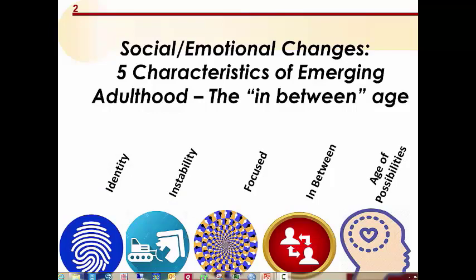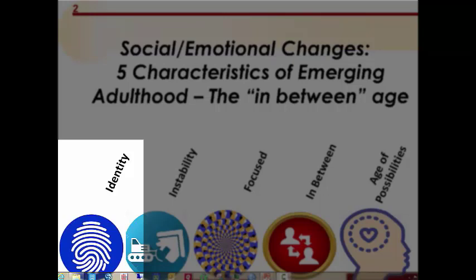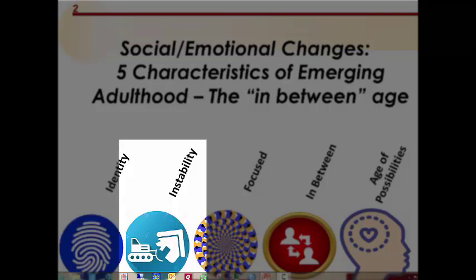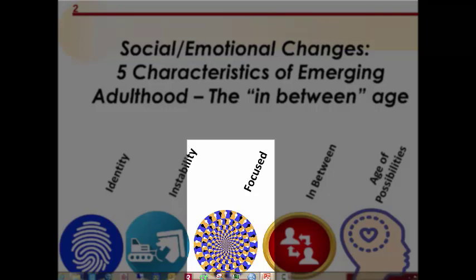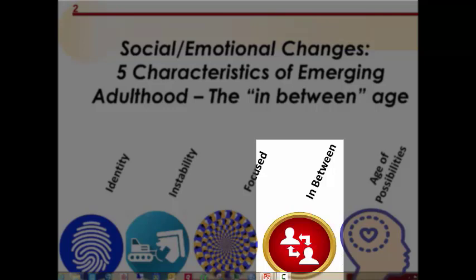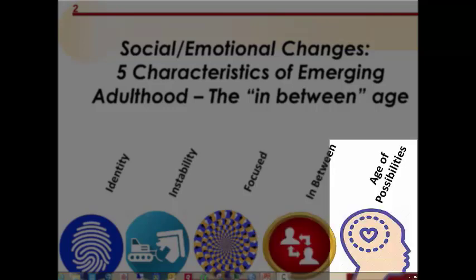A couple videos ago I showed you a slide listing the five characteristics of emerging adulthood, or the in-between age. They are: identity explorations in love and work, instability regarding residential changes, self-focus involving reduced social obligations, the feeling of being in between — neither adolescent nor adult — and the age of possibility, where they believe anything is possible.